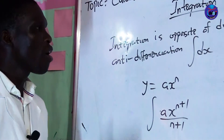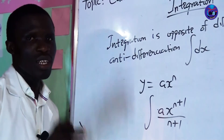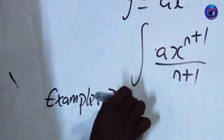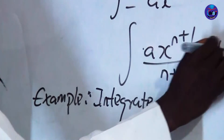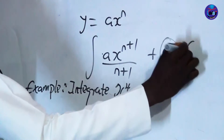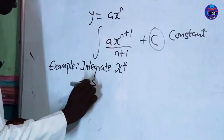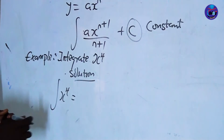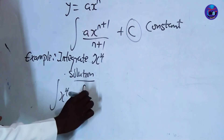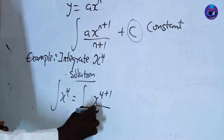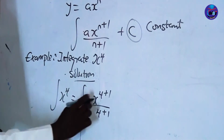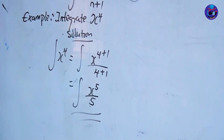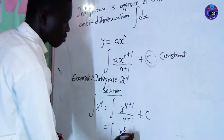Let me give you one example on how to solve integration. Integrate x raised to power 4. Solution: applying the formula, this gives x to the power 4 plus 1, divided by 4 plus 1, which equals x raised to power 5, all over 5, plus C. This is our answer. Please take note that we always add the constant C.